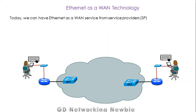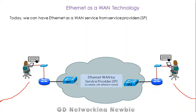Today we can have Ethernet as a wide area network service provided by a service provider. You can see here there are two networks, and we have this service from one point to another provided by the service provider. This Ethernet WAN service from the service provider can have different names.